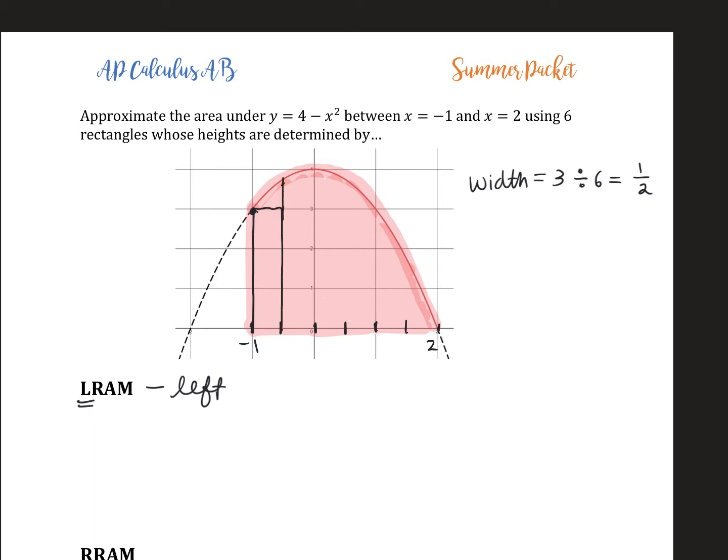Now I'll draw rectangles, with heights determined from the left-hand endpoints. These six rectangles in black approximate the area. Clearly this isn't exact—this rectangle misses part of the area, whereas the fifth rectangle counts too much. But it serves as a good approximation. We use rectangles because the area of a rectangle is easy: base times height.